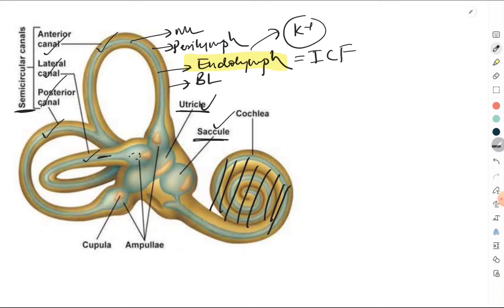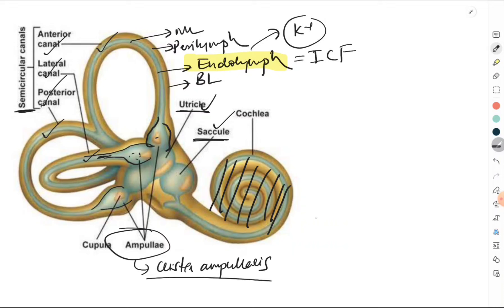One end of each semicircular canal shows an expanded portion called the ampulla. The ampullae contain the sensory organ of the semicircular canal, called the crista ampullaris. The crista ampullaris is going to sense or detect angular acceleration — also referred to in some books as rotational movement or rotational acceleration.